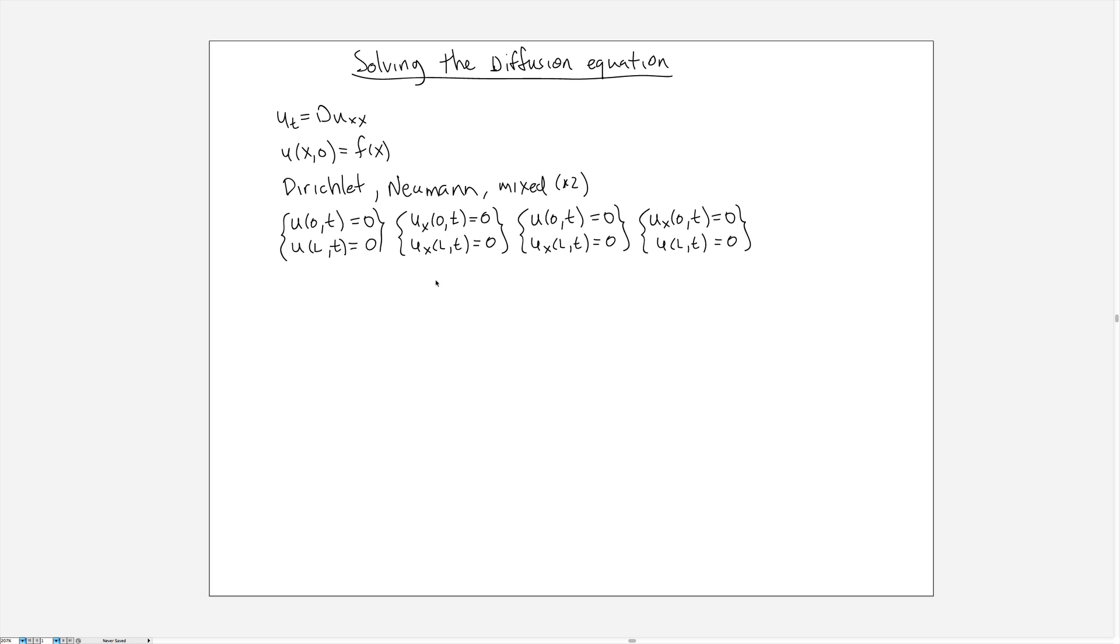So these all are called homogeneous boundary conditions because they all include zeros and so this will be a slightly simpler situation, but let's talk about the full general problem which can complicate things a bit in which the boundary conditions are not necessarily equal to 0.